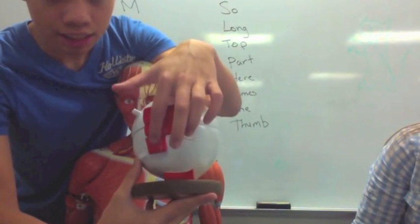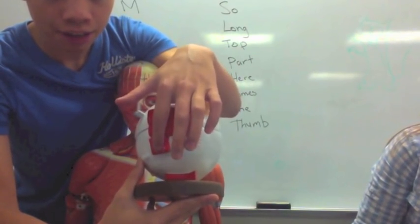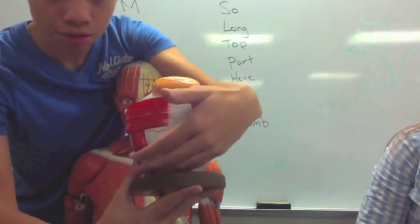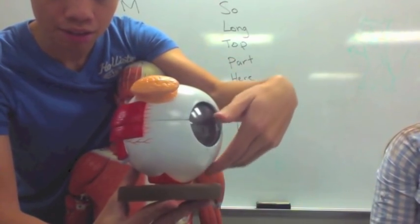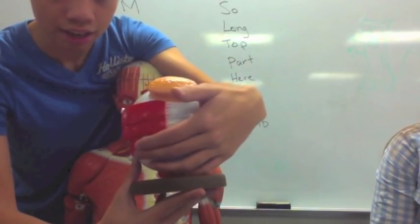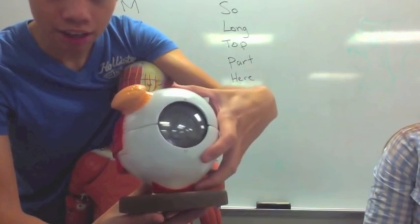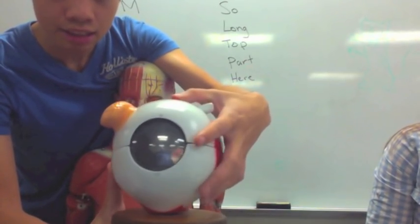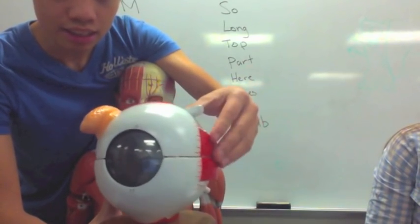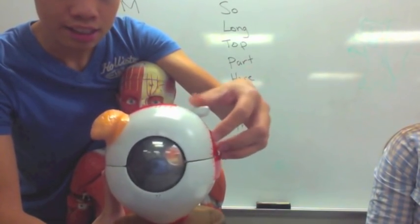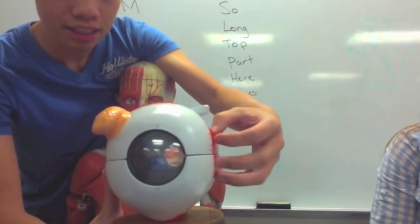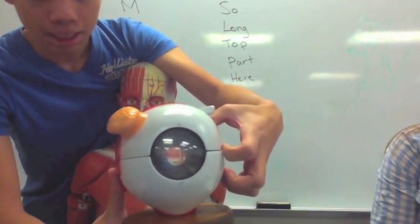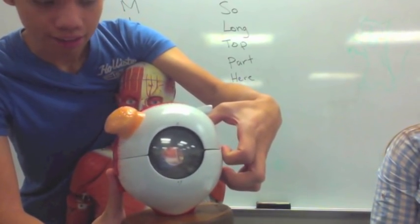Under your lateral rectus is your inferior oblique, which wraps around under the eye. Under here is the inferior rectus. Then on the side where your superior oblique is, this is your medial rectus.